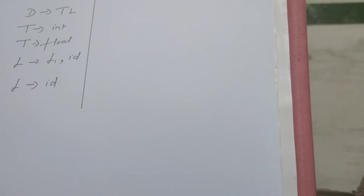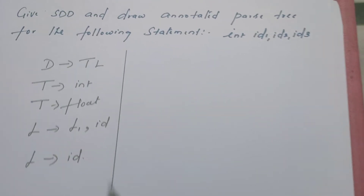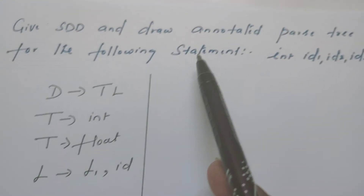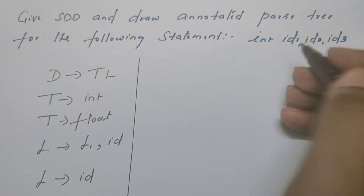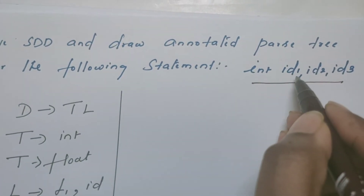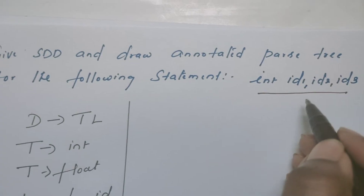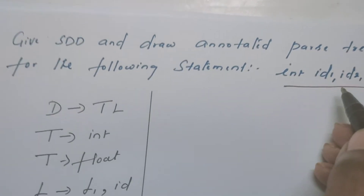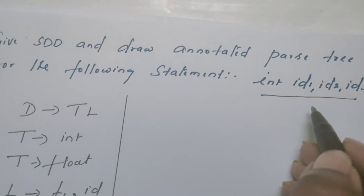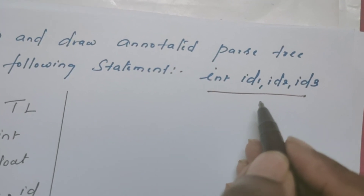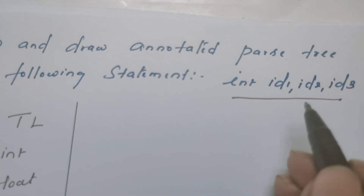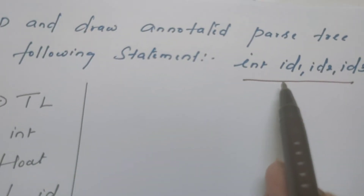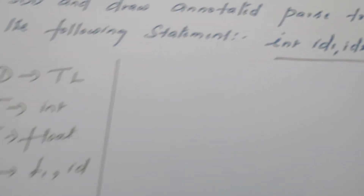The problem is: give the syntax-directed definition and draw the annotated parse tree for the following statement. The statement is 'int identifier' — there are three identifiers separated by commas. In most programming languages, we come across this — this is nothing but a declaration statement. For this statement, this is the corresponding grammar.